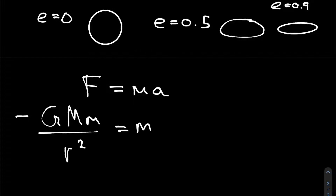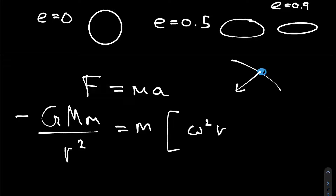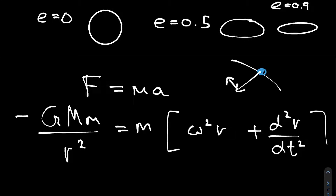On the other side we have the mass of the earth times the acceleration, which is composed of two parts. The first is a center-seeking component, omega² r, with a negative sign because it's centripetal. The second component, which we don't quite know yet, is the second derivative of r with respect to time. We can cancel the little m from both sides, converting our force equation into an acceleration equation.